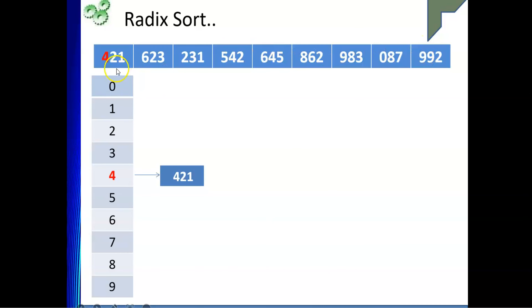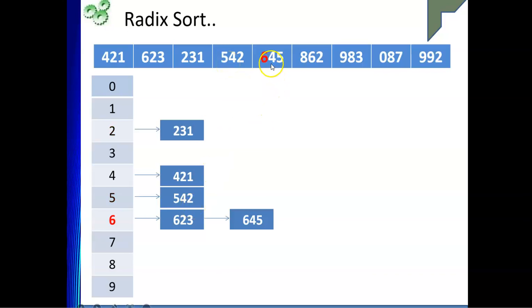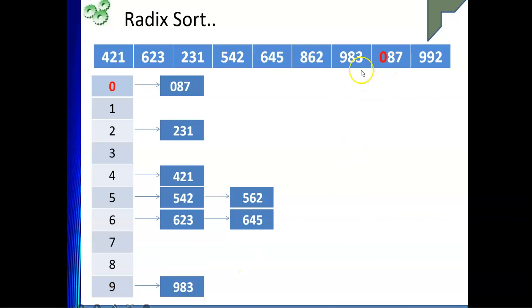Now we sort by the most significant digit. 421 goes into bucket 4. 623 goes into bucket 6. 231 goes into bucket 2. 542 goes into bucket 5. 645 goes into bucket 6 after 623. 862 goes into bucket 8. 983 goes into bucket 9. 087 goes into bucket 0. 992 goes into bucket 9 after 983.